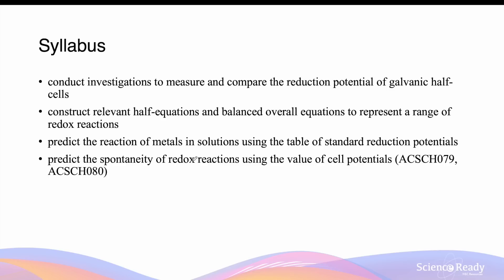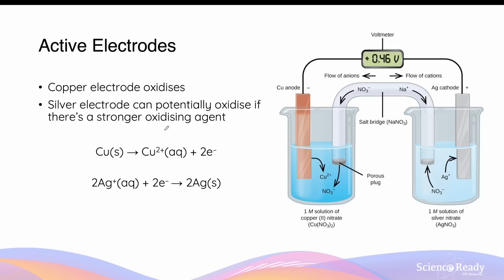Hey everyone, this video is on galvanic cells involving inert electrodes. Active electrodes are common amongst setups for galvanic cells. These are electrodes that are involved in redox reactions, either oxidation or reduction.